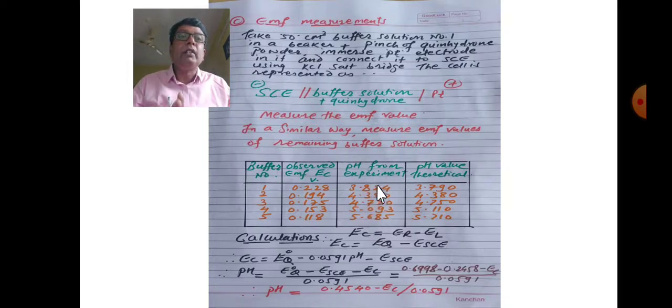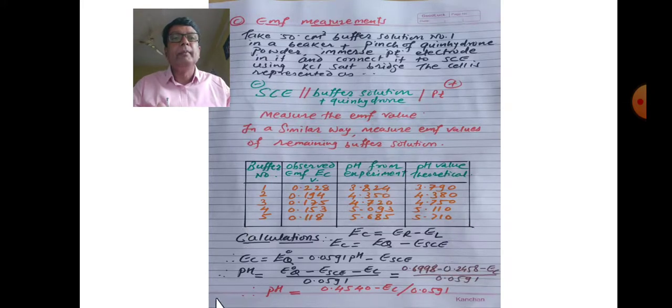Now for calculations to get theoretical values. EC is equal to ER minus EL. EMF of the cell equals EMF of right hand side electrode minus that of left hand side electrode. Right hand side is platinum quinhydrone electrode, left hand side is SCE. Therefore EC equals EQ of quinhydrone electrode, which is zero minus 0.0591 pH. EC value: E0Q minus 0.0591 pH.